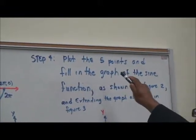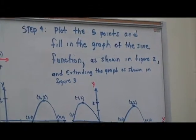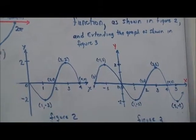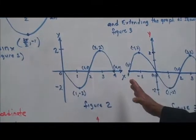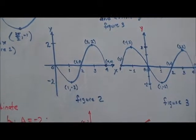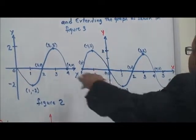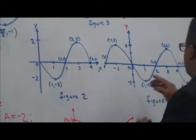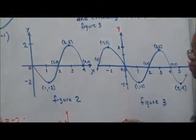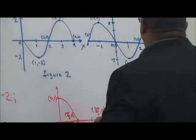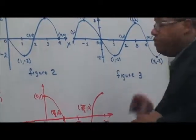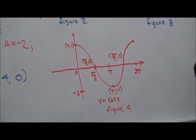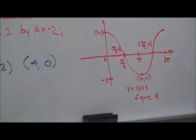Step 4: plot the five points and fill in the graph of the sine function as shown in figure 2, then extend the graph as shown in figure 3. The wave is extended to negative infinity and to positive infinity, with period 4 on each side. This is how we solve this type of problem. Now let's go to the board and do another type of problem.